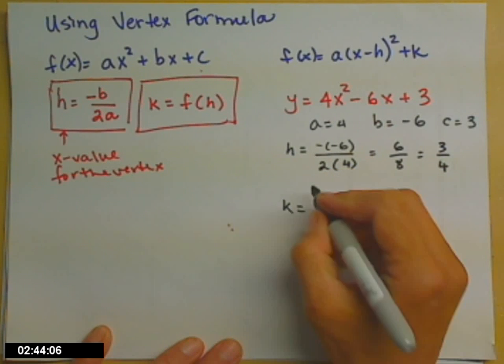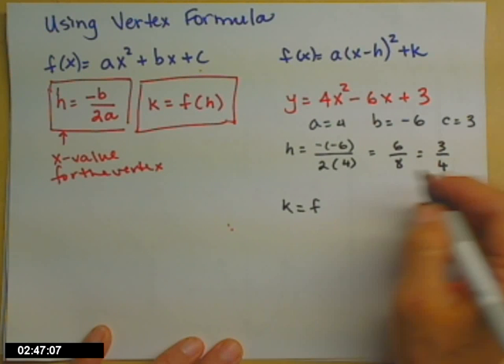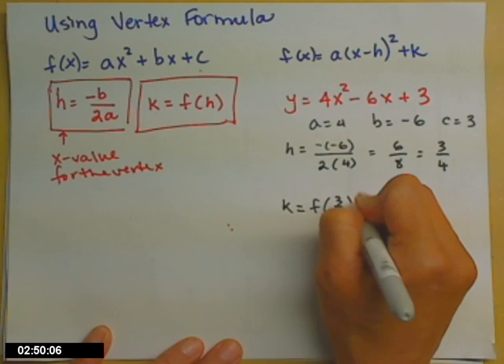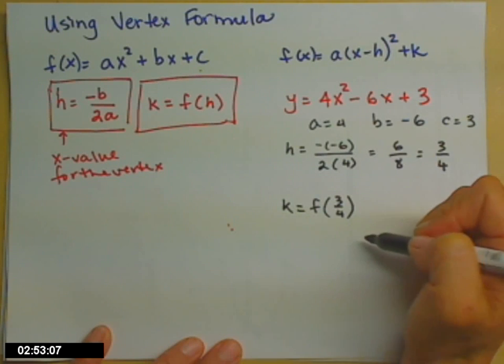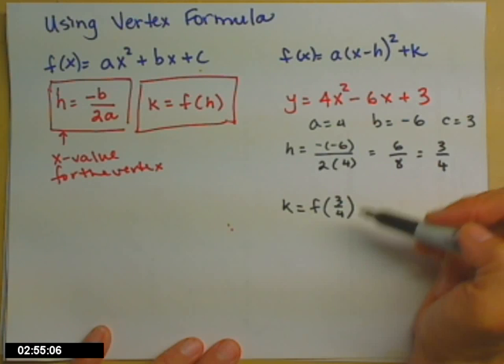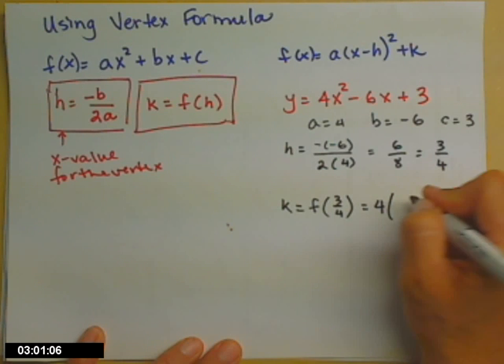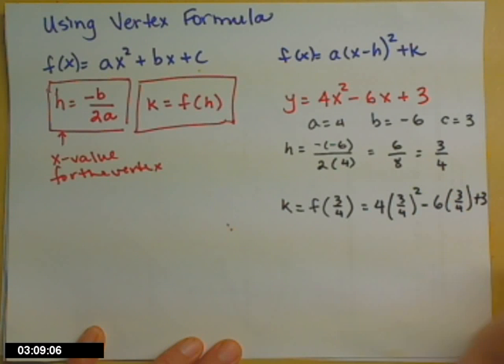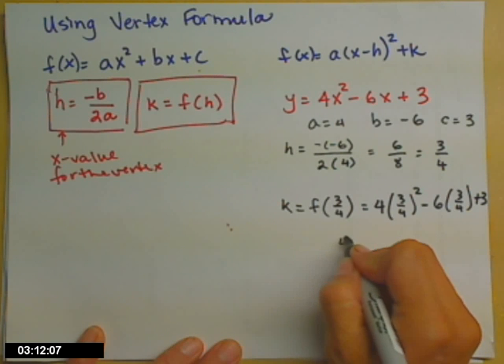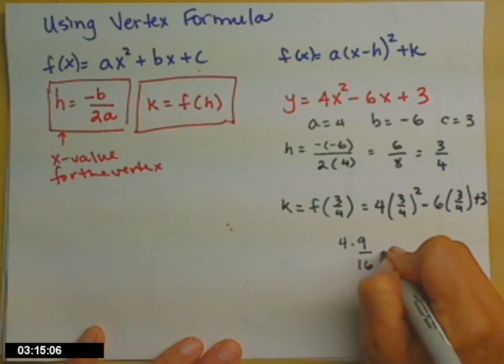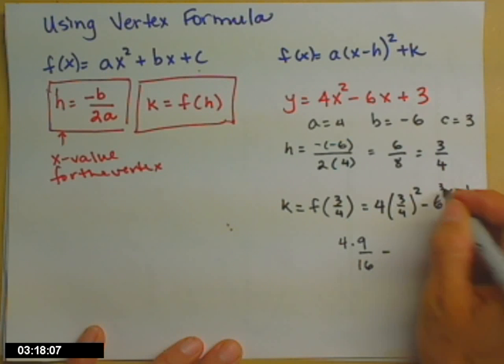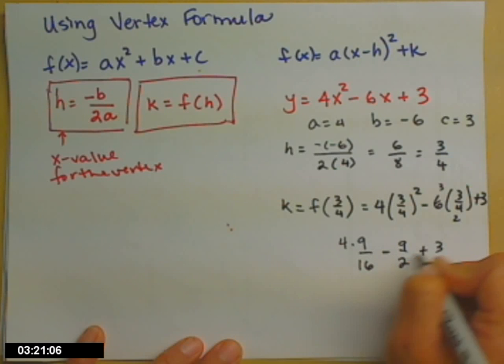The y part, k, I find by taking that 3 fourths that we just found and plugging that in for the x's in my function. Now, notice I just changed from my y to an f of x again. Try not to freak out too much. So, let's plug that in. 4 times 3 fourths squared minus 6 times 3 fourths plus 3. What do we get there?